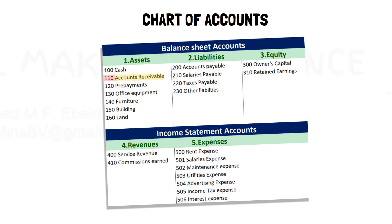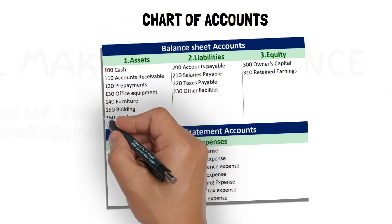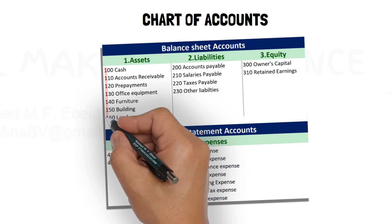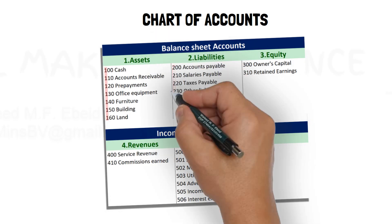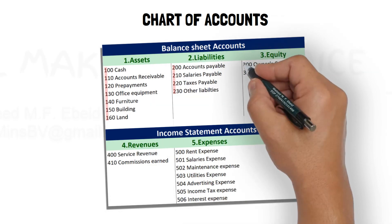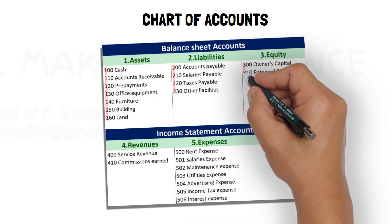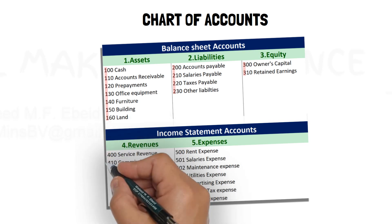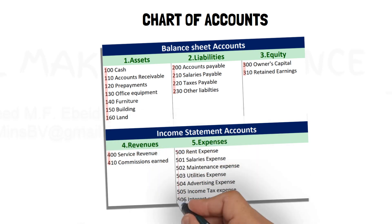The account number can have two or more digits. Account numbers for asset accounts start with 1, liability accounts start with 2, 3 for equity accounts, 4 for revenue accounts, and 5 for expense accounts.